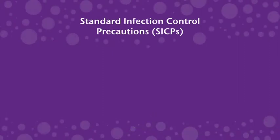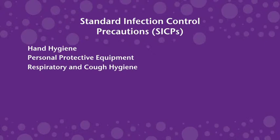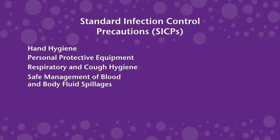They are: 1. Hand hygiene – cleaning your hands properly and regularly. 2. Personal protective equipment – disposable gloves and aprons and occasionally eye and/or face protection and fluid repellent masks. 3. Respiratory and cough hygiene – explains the simple steps to take to prevent passing on a cold or other illnesses. 4. Safe management of blood and body fluid spillages – this includes cleaning up spillages such as urine and vomit.